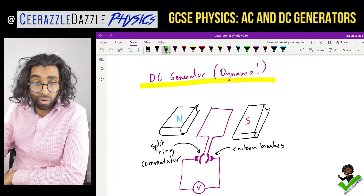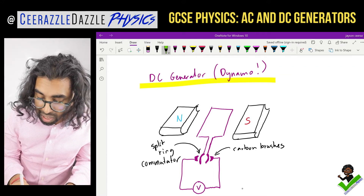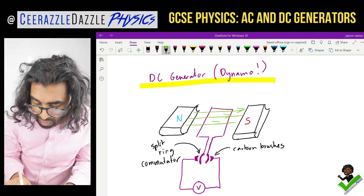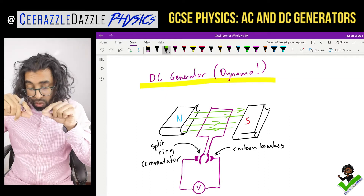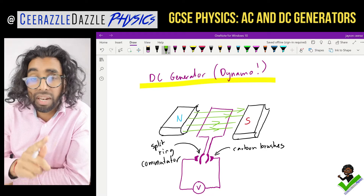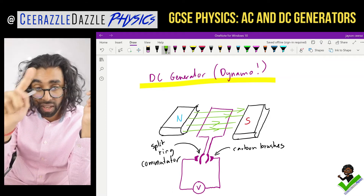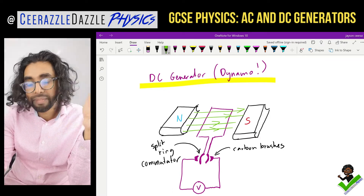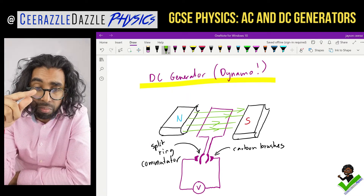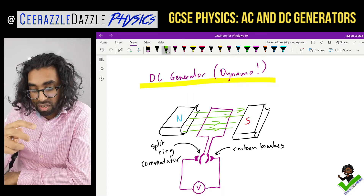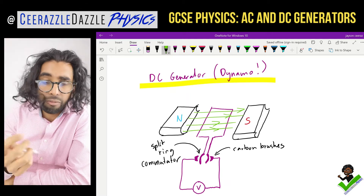We have a bar magnet with north and south poles, and a square wire coil placed within it, so there's a magnetic field going from north to south. The two parts of the wire are connected to a split ring commutator — a ring split into two. These are connected to two carbon brushes, which allow the coil to rotate freely without getting tangled up.